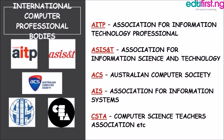Examples of international computer professional bodies include: AITP — Association for Information Technology Professionals; ASIS&T — Association for Information Science and Technology; ACS — the Australian Computer Society; AIS — Association for Information Systems; and CSTA — the Computer Science Teachers Association, to which all computer science teachers are members.